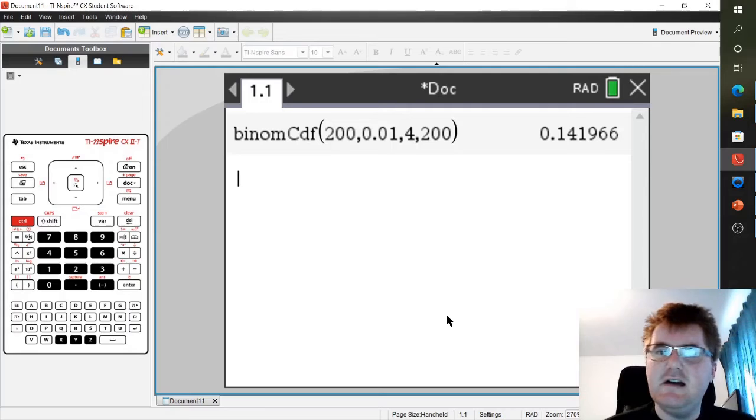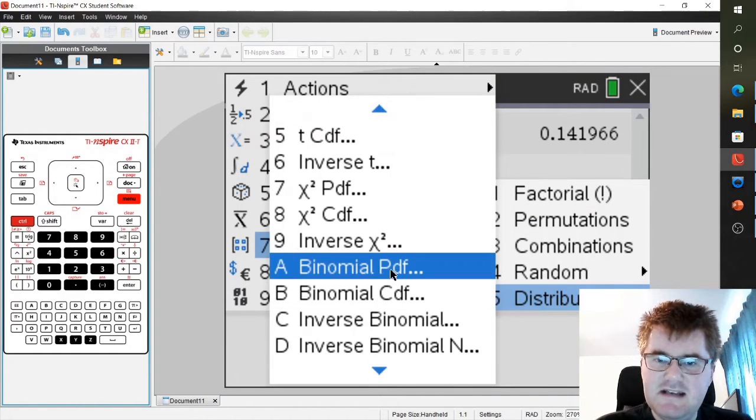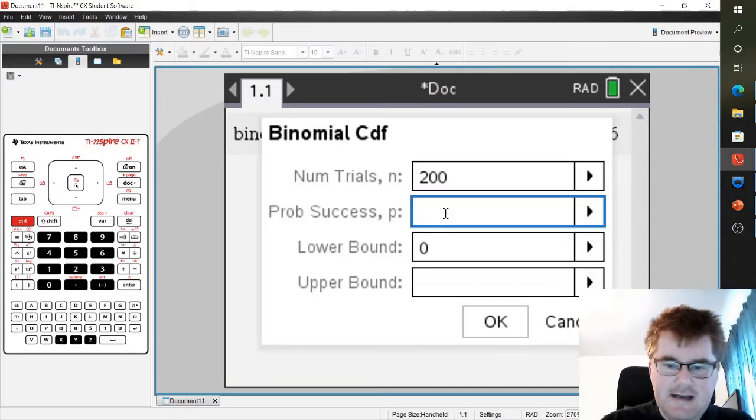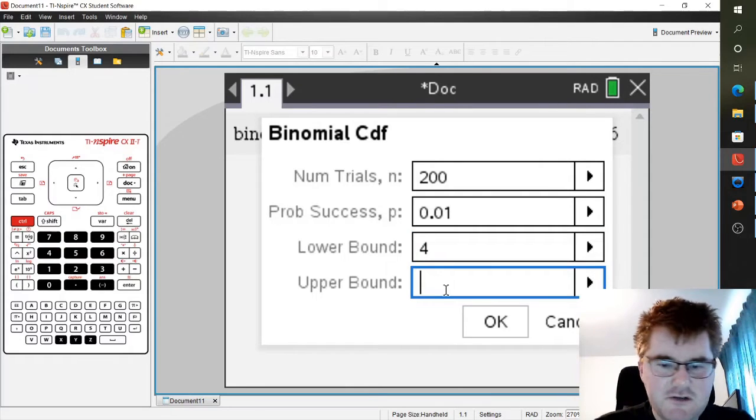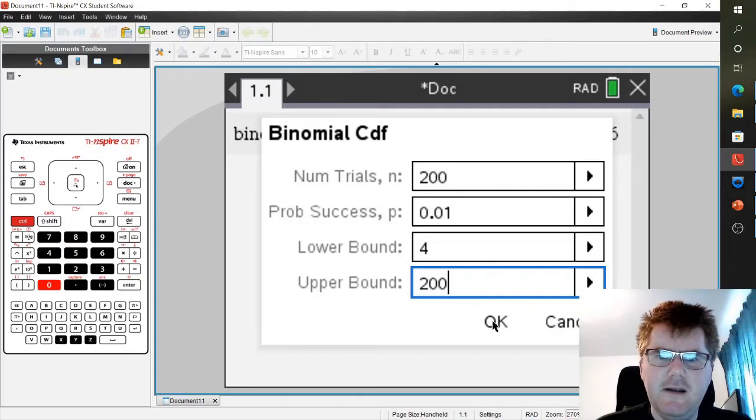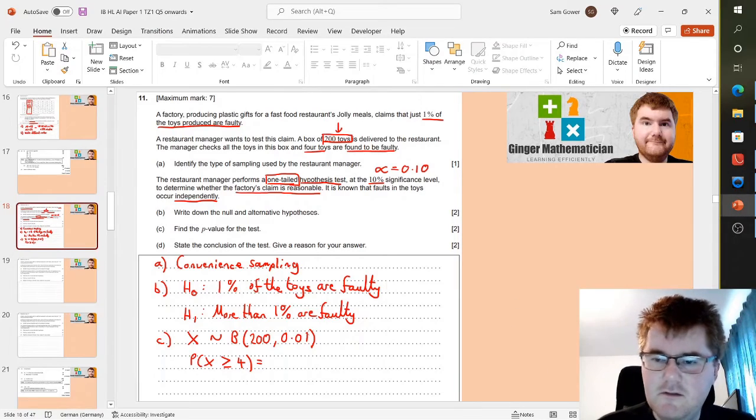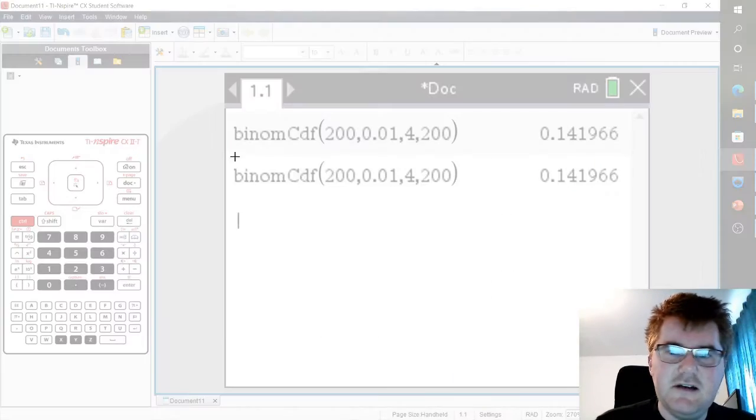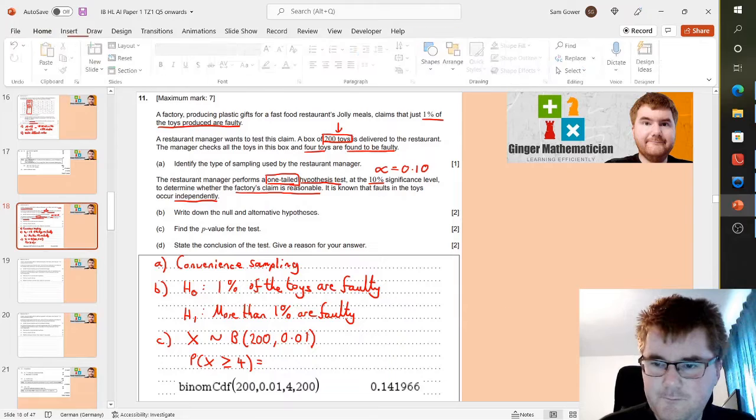And now we're going to go over to the graphical calculator and work that out. So, let me just explain what I put into the calculator here. So, I've gone to binomial CDF here. A number of trials, the number of toys we're testing here are 200. Probability of success, that it is faulty, is 0.01. A lower bound is going to be four, because we want to include that number. And that upper bound, I'm just going to choose a 200, big number here. And then we get our final answer here of 0.1415966. So, what I'm going to do, I'm going to pop that in over here.